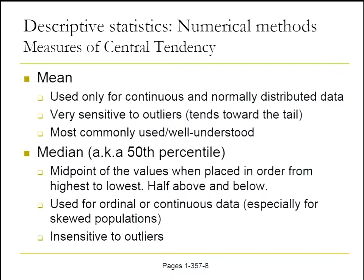The median, also known as the 50th percentile, is the midpoint of values arranged from smallest to largest — the middle value in that distribution. If you have an even number of data points, it's the average between the two middle values. It's used for either ordinal data — like the New York Heart Association classification or a Likert scale — or continuous data, especially in the case of skewed distributions. It's relatively insensitive to outliers, so it's not going to be pulled toward extremes.